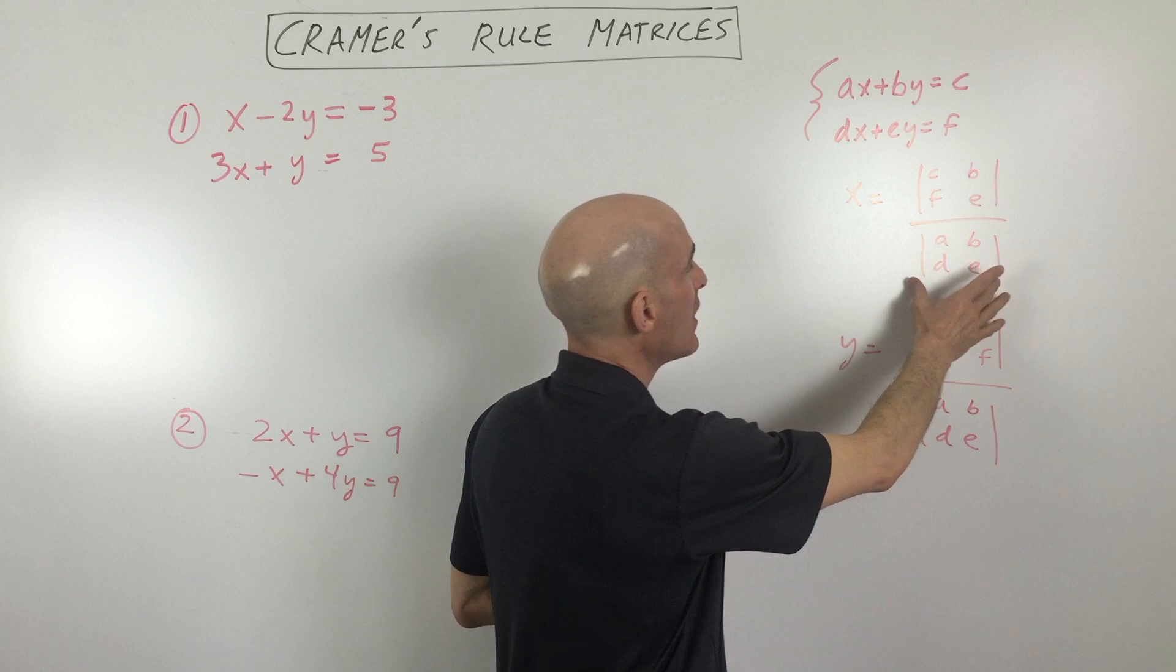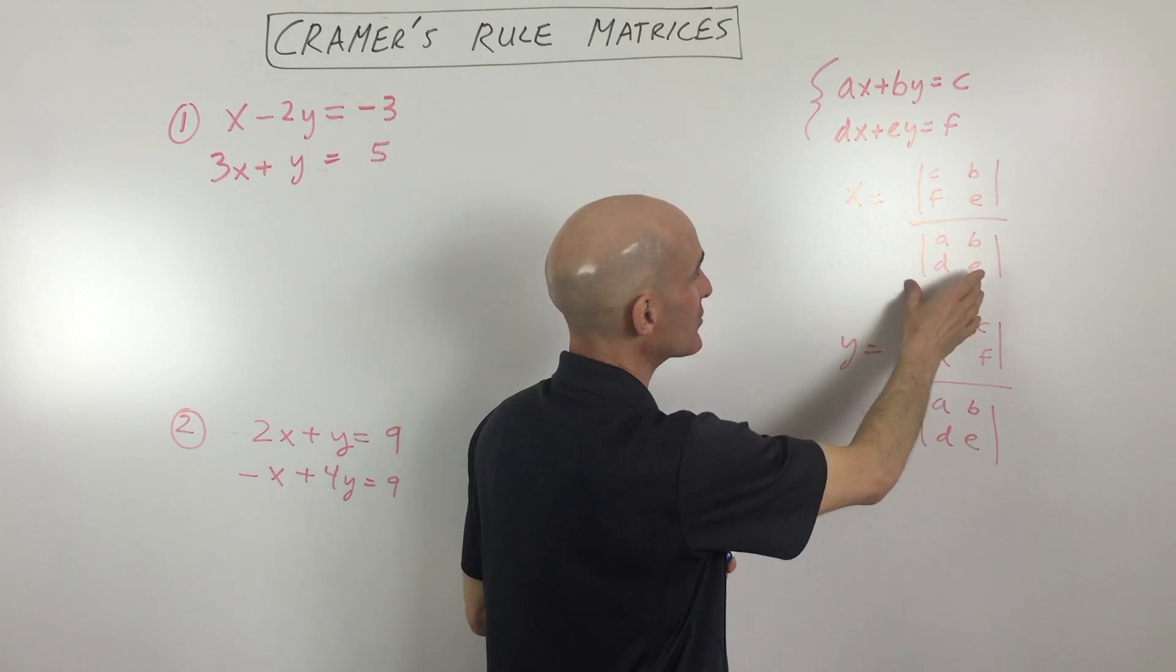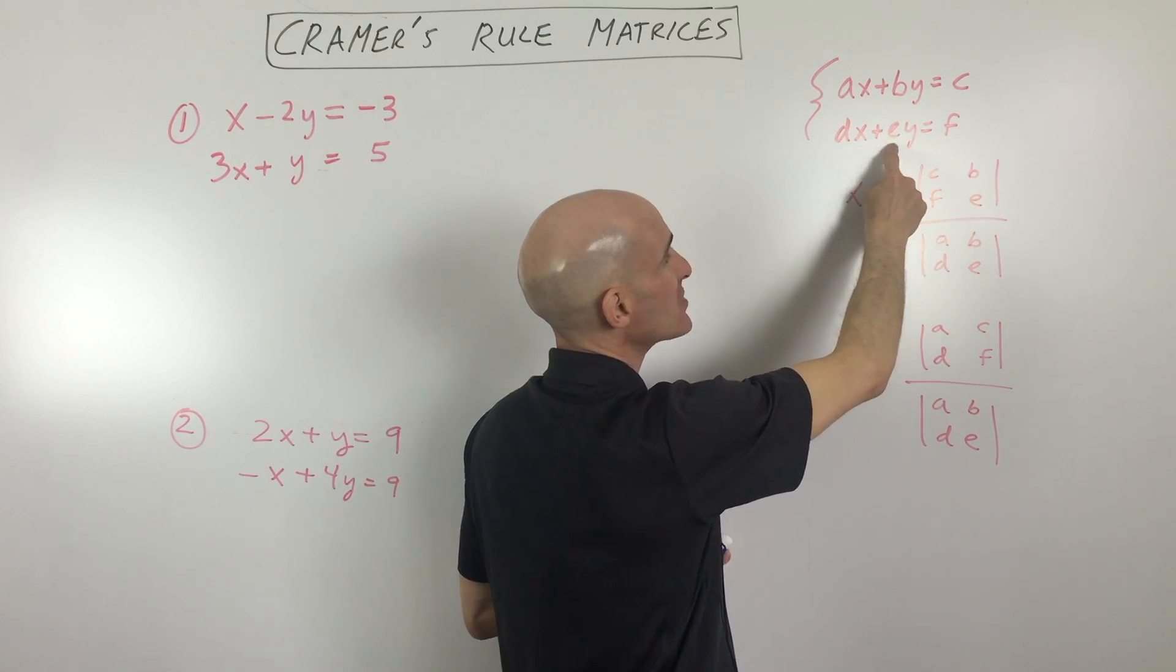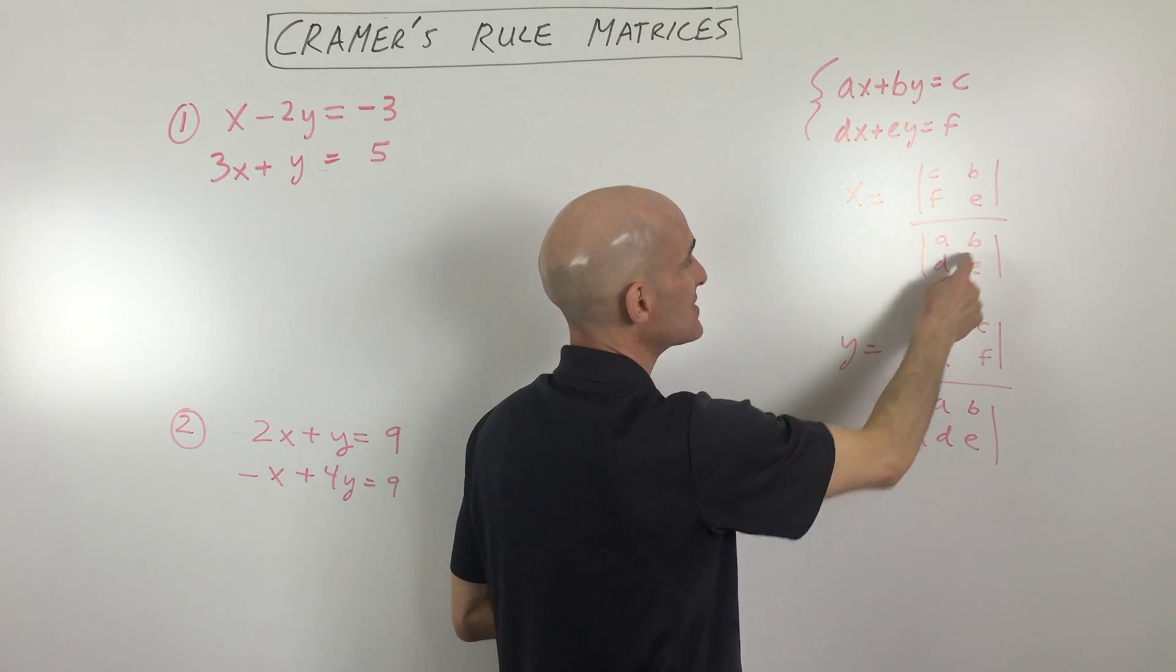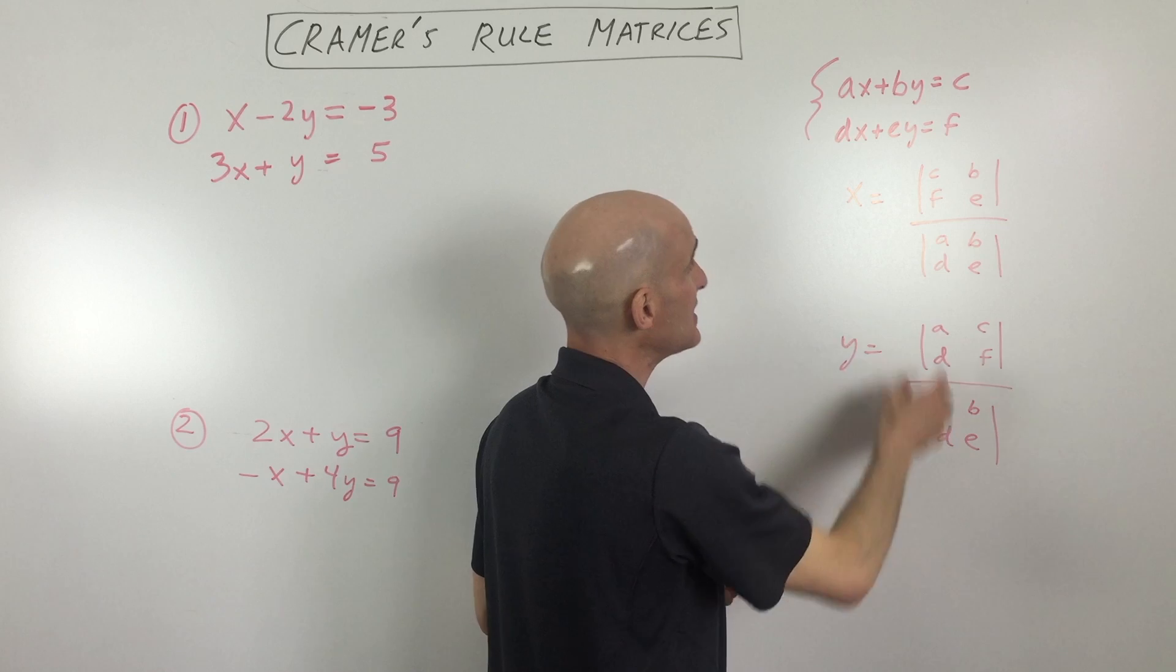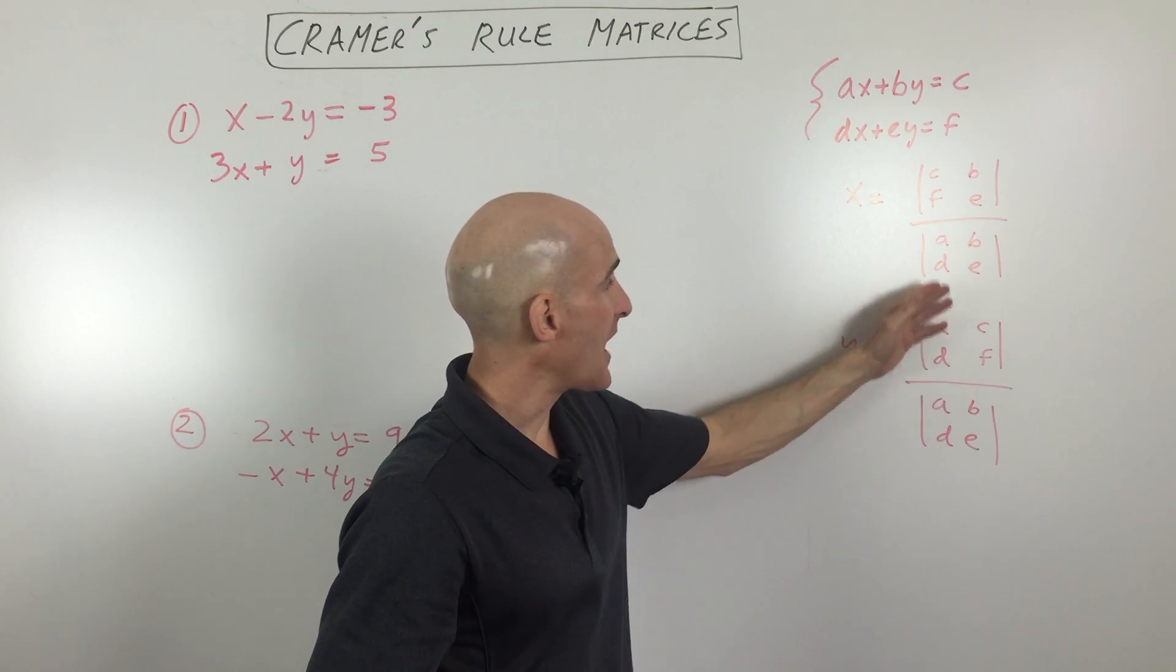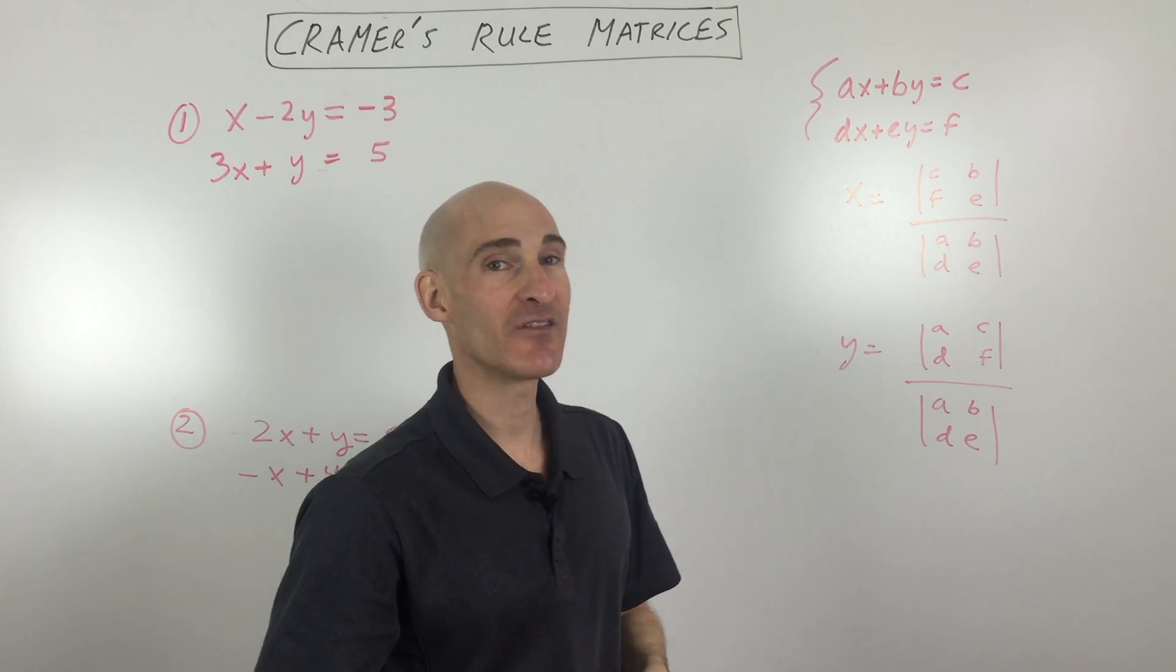All you have to do is the denominators - so we're trying to solve for x and y. The denominators, what you want to do is make a matrix using the coefficients, the numbers in front of the variables. So we've got a, b, d, and e. Those are the matrices we're going to use for the denominator. And what these bars represent is that we're going to be taking the determinant of that matrix.